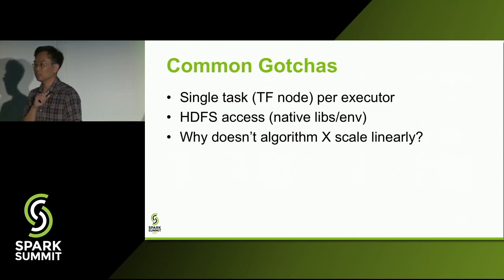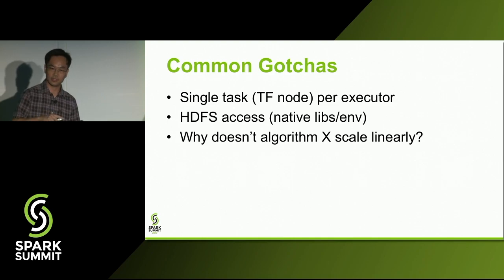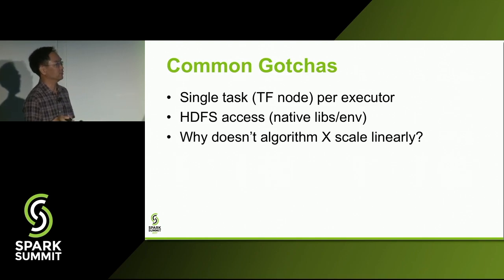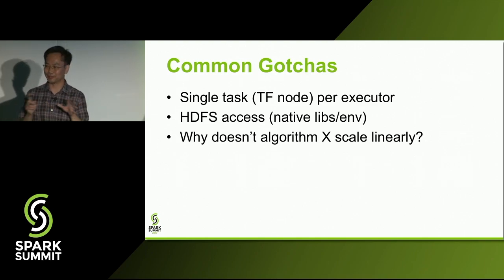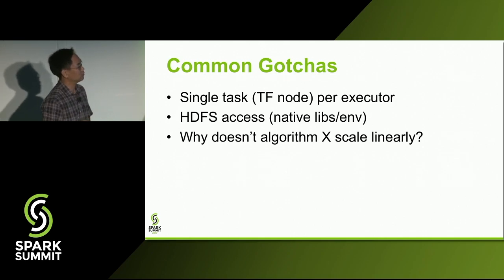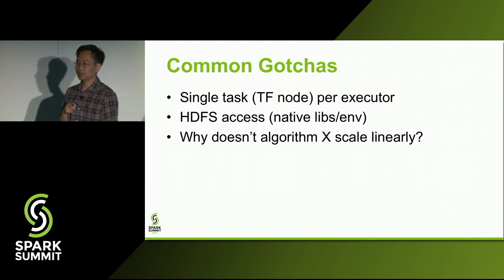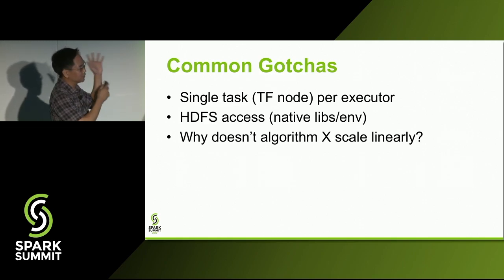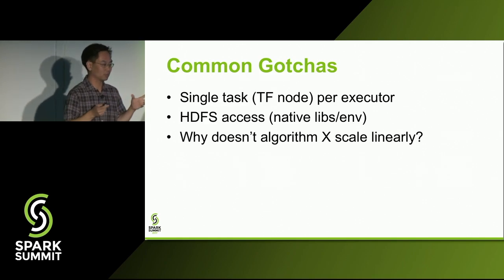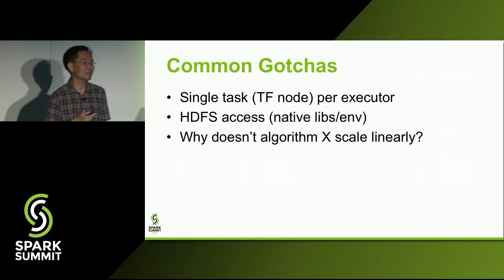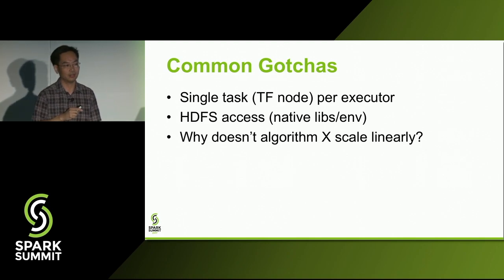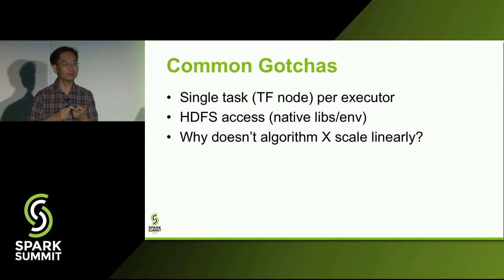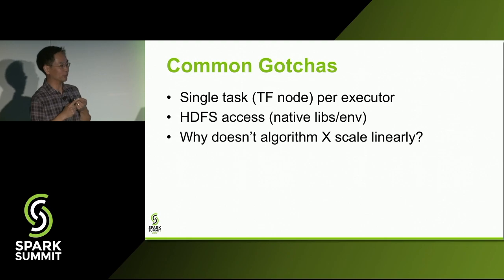Another gotcha: TensorFlow natively supports HDFS access, but only through various jars and libraries that may be present on your environment. If you have a non-standard Hadoop location, that can trip people up. And I get asked a lot — if I convert my algorithm to TensorFlow on Spark, why doesn't it scale linearly like your benchmark? At the highest level: if your application is not stressing your local single node, adding 10 more nodes is highly unlikely to make it better.